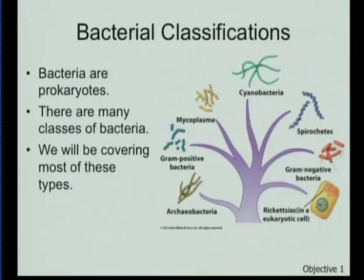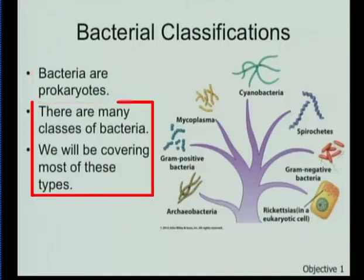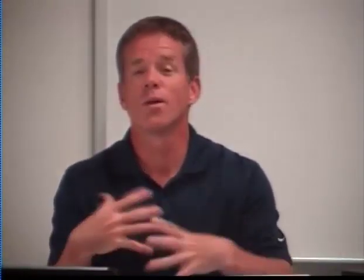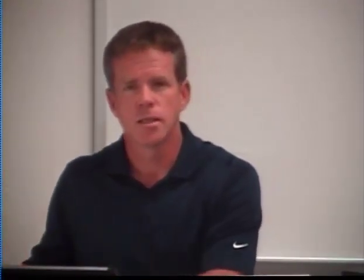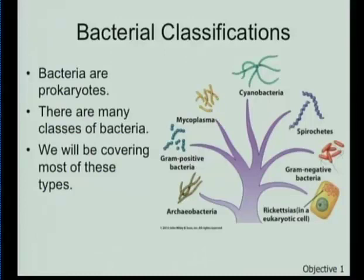Bacteria are prokaryotic organisms with many classes. We put them in groups based on their structure, motility, ability to produce different types of toxins, whether they require an intracellular environment, and whether they require oxygen, an oxygen-poor environment, or can function in both. We have to understand how these bacterial organisms work if we're going to treat them appropriately — and how they work compared to how we work — because certain treatments need to decrease bacterial growth or kill bacteria without killing our own cells.